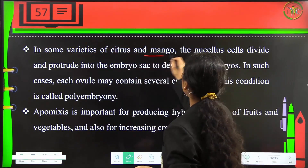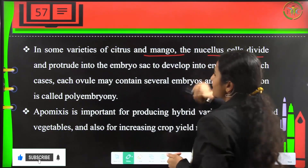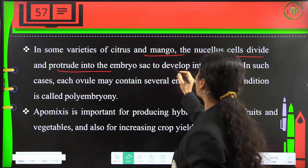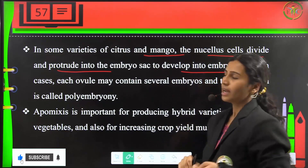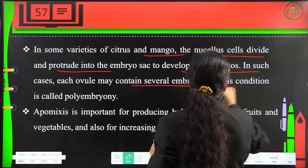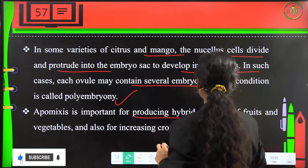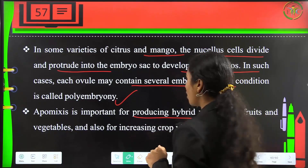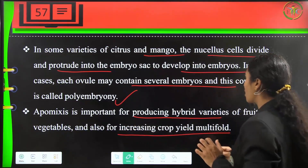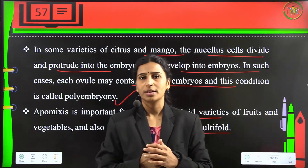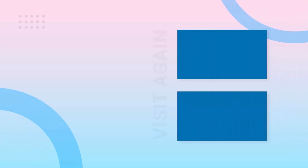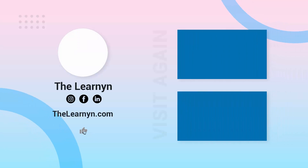In some varieties of citrus and mangoes, the nucellus cells divide and protrude into the embryo sac to develop into embryos. In such cases, each ovule contains several embryos, a condition called polyembryony. Apomixis is a very important procedure for producing hybrid varieties of fruits and vegetables and is also used in increasing crop yield manifold.